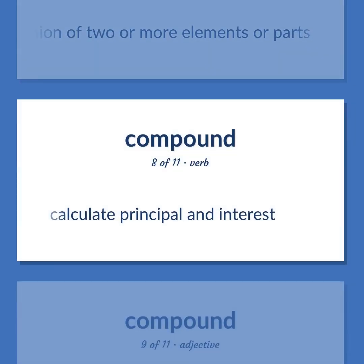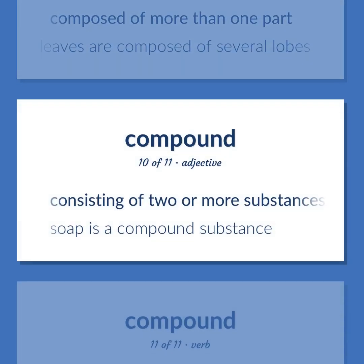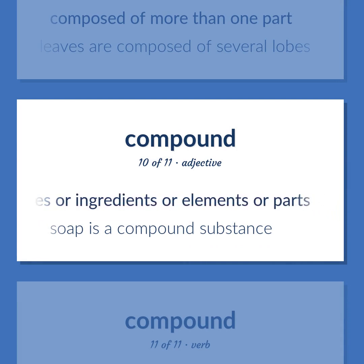Compound: Calculate principle and interest. Composed of more than one part — compound leaves are composed of several lobes. Consisting of two or more substances or ingredients or elements or parts; soap is a compound substance.